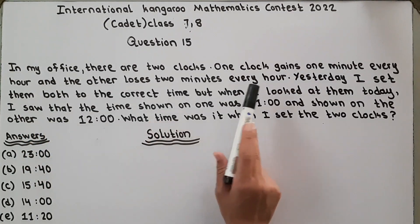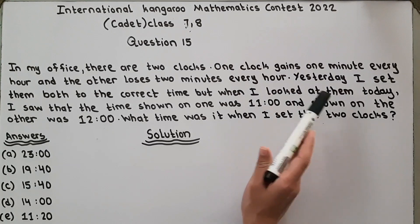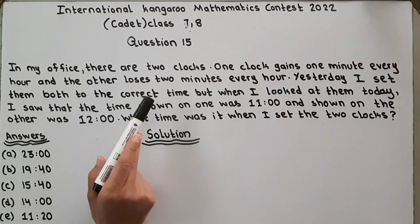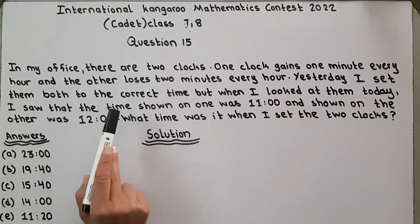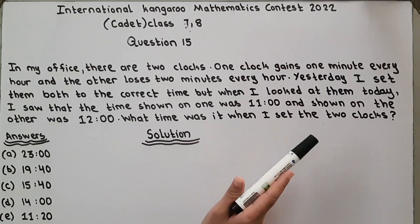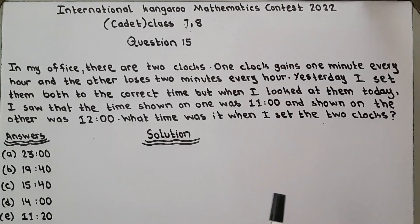In my office there are two clocks. One clock gains one minute every hour and the other loses two minutes every hour. Yesterday I set them both to the correct time, but when I looked at them today, I saw that the time shown on one was 11:00 and shown on the other was 12:00. What time was it when I set the two clocks?